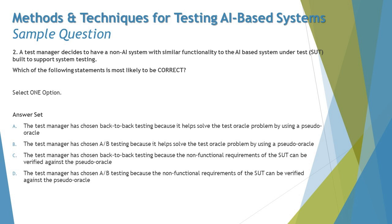Option B says the test manager has chosen A/B testing because it helps solve the test oracle problem by using a pseudo oracle. A/B testing is different — with A/B testing we use a variant of the SUT to compare with the SUT. A pseudo oracle is important, but here we are not just comparing two systems; we are retrieving expected results from existing systems to solve the test oracle problem. Option B is about comparing two system variants, not about solving the test oracle problem.